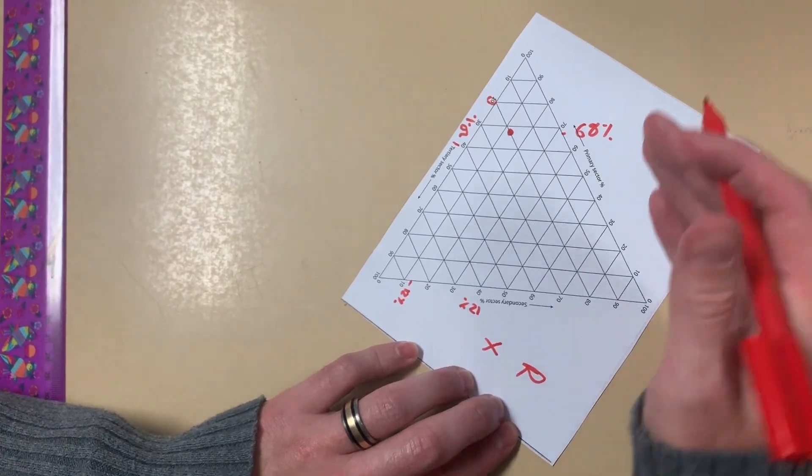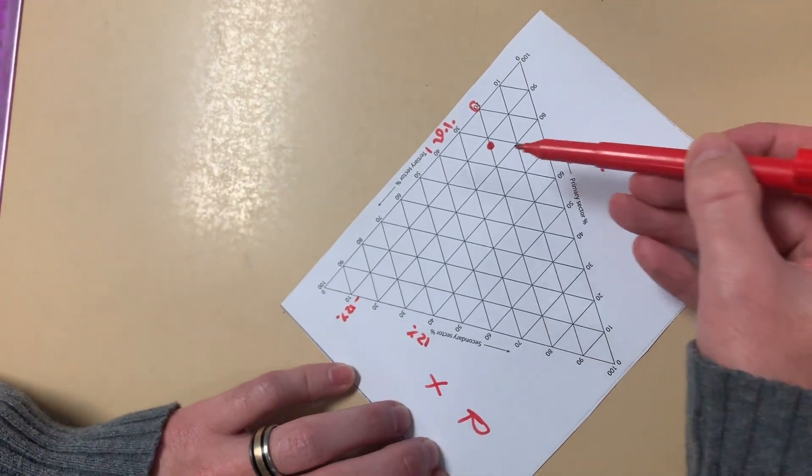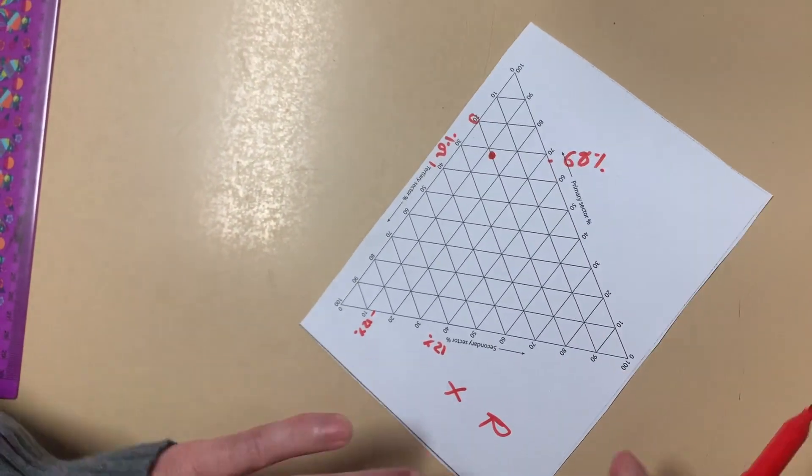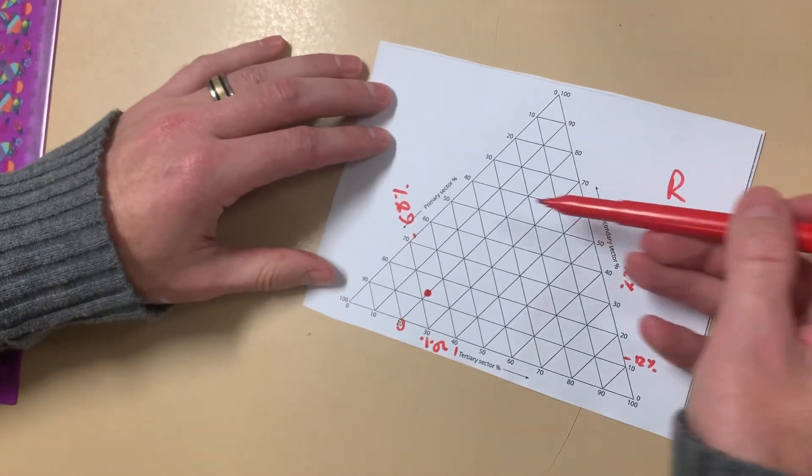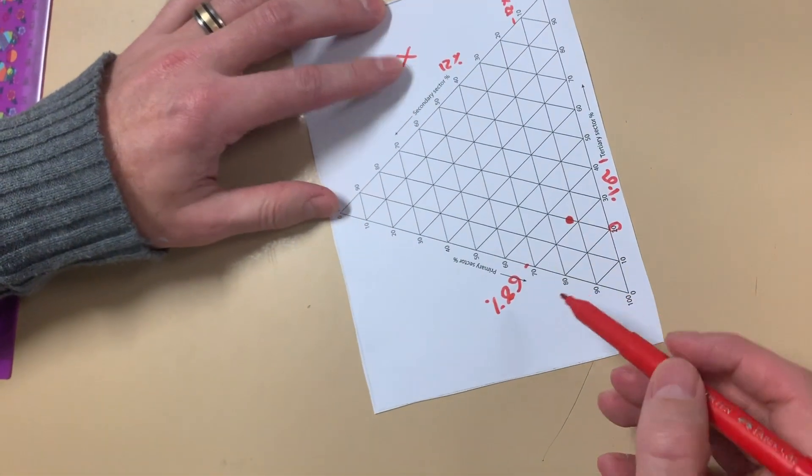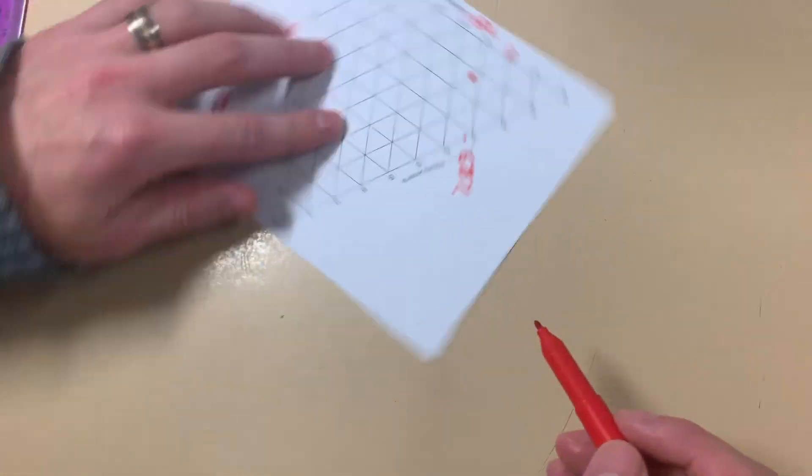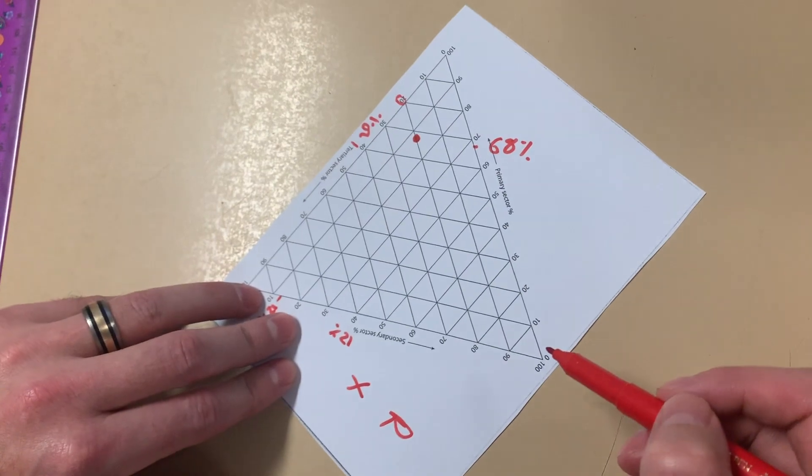Again, I've just done the same thing three times in a row. I've gone from the right-hand side, horizontally across. From the right-hand side, horizontally across. From the right-hand side, horizontally across. And I can see that my breakdown, secondary is twelve percent, tertiary is twenty percent, and primary is sixty-eight percent.